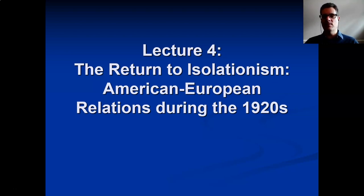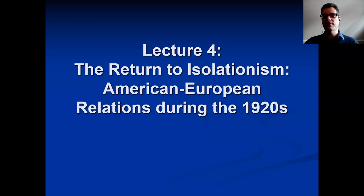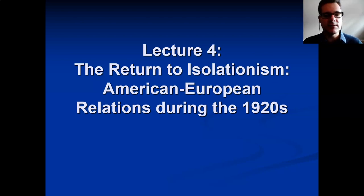The 1920 presidential election basically became a referendum on Wilson's deal. Wilson wasn't standing again — he'd reached the end of his second term and was suffering from acute health problems. The Democratic candidates, one of whom had Franklin Delano Roosevelt as the vice presidential candidate, stood on a Wilsonian internationalist ticket. However they lost; the Republicans took over, and the Republicans were very much the isolationist party, which brings us to this lecture.